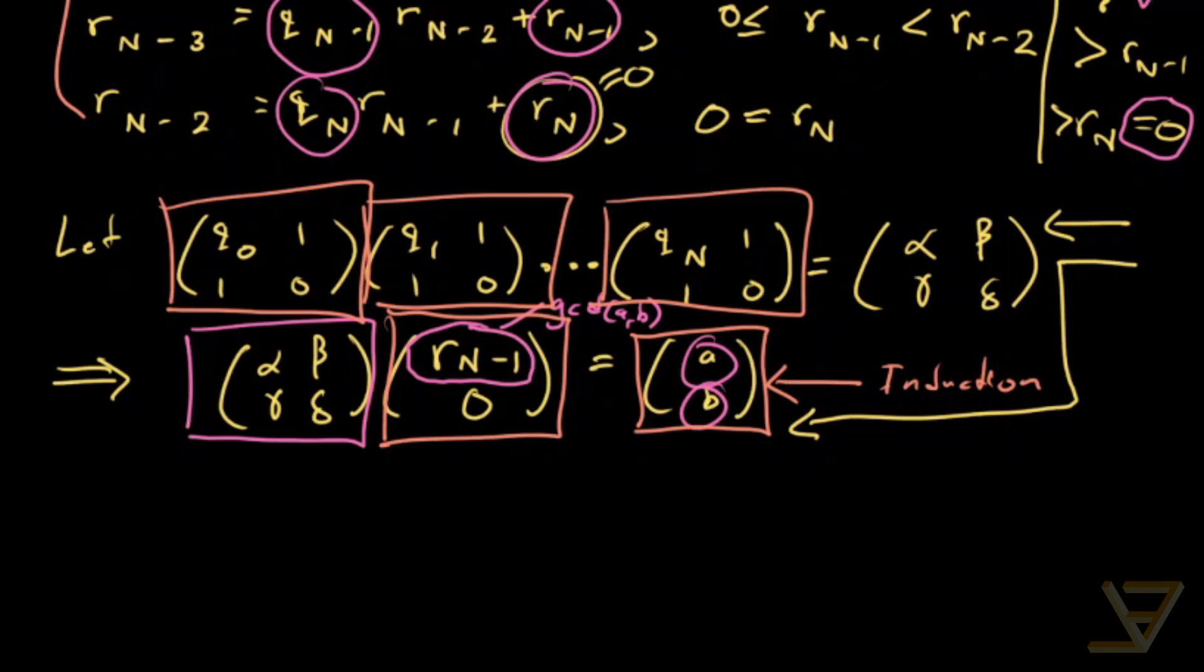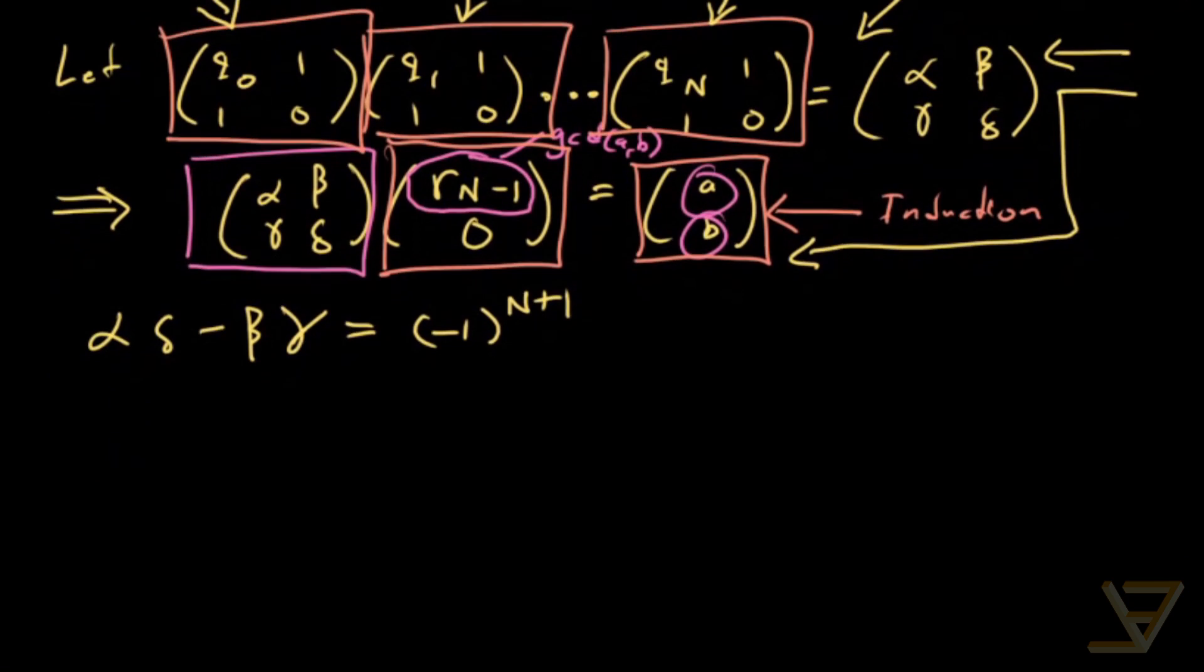And what we find is that if we take the determinant of both sides of this, we get alpha delta minus beta gamma is equal to the determinant, by the multiplicativity of the determinant. It's the determinant of this times the determinant of this all the way through the determinant of this. But each of those determinants is just negative one. And there's n plus one matrices, so it's negative one to the n plus one. And this is really important because this allows us to compute the inverse of [[alpha, beta], [gamma, delta]].